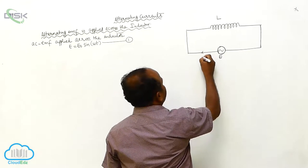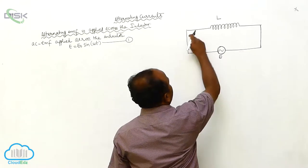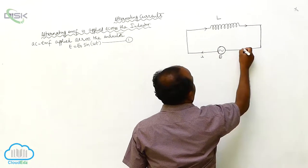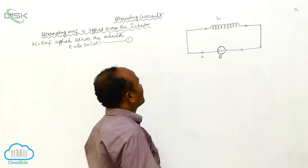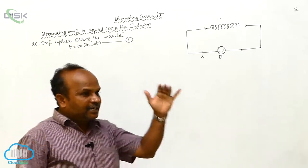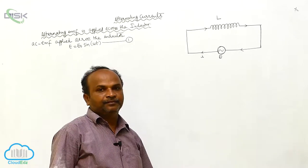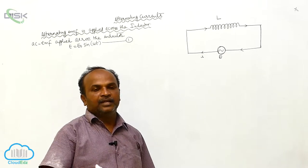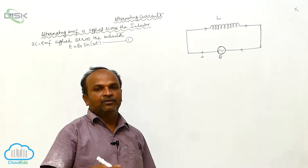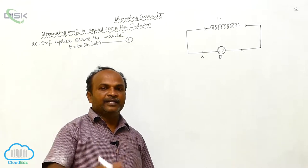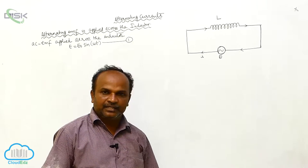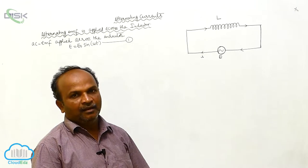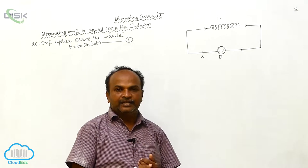This is the AC current passing through the inductor. Whenever AC current passes through the coil, there is a change in current. AC current means the magnitude of the current is changing. As the magnitude of the current changes, there are variable magnetic fields in the coil.